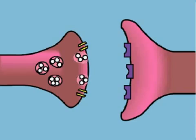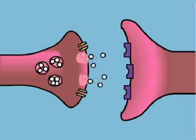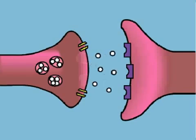The membrane of the vesicle fuses with the membrane of the axon terminal, enabling the vesicle to release its contents into the synaptic space. The molecules released from the vesicles are chemicals called neurotransmitters.